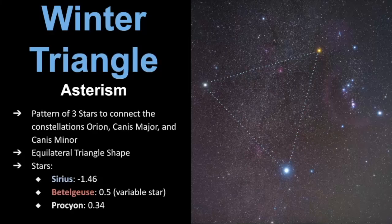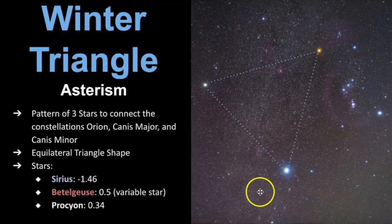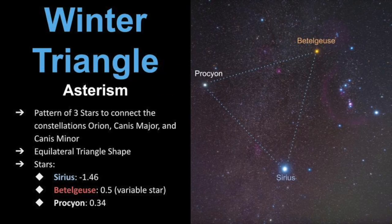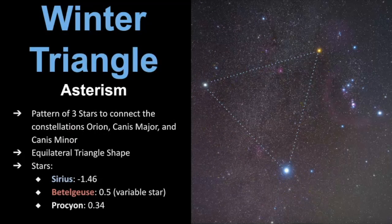In this video we're going to focus on the winter triangle and the winter hexagon — both are asterisms. The winter triangle, as you can probably guess, is made up of a pattern of three stars, and it connects the constellations Orion, Canis Major, and Canis Minor. It makes an equilateral triangle shape, which makes it easy to point out in the sky. These three stars are the brightest ones in the winter sky, so even if you live in an area with lots of light pollution, you should still be able to spot them and use them to find other constellations.